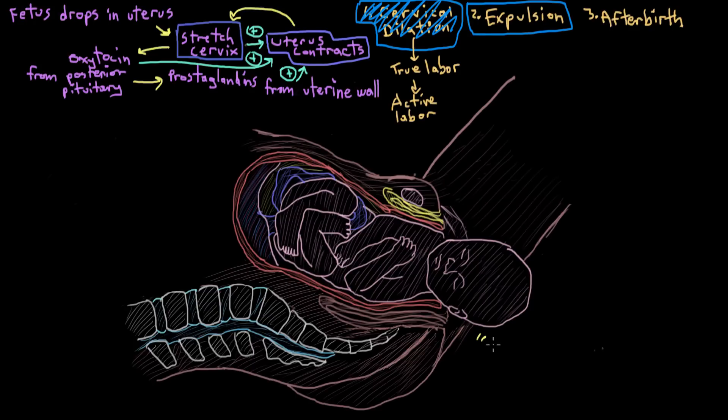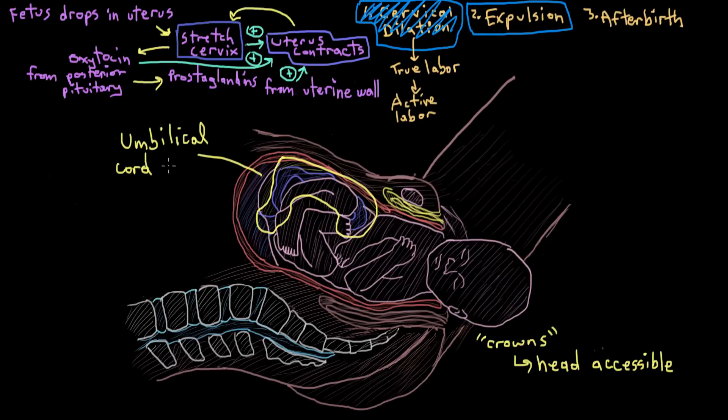Once the baby's head crowns, or becomes visible to the healthcare professional assisting with the birth, they'll turn the baby to the side to make delivery of the rest of the baby's body a little bit easier on both the mother and the baby. By the way, in this drawing here, this baby's a little past crowning. Once the baby is out, the umbilical cord that connected the baby's belly button or umbilicus to the placenta gets cut, and the baby gets cleaned up.